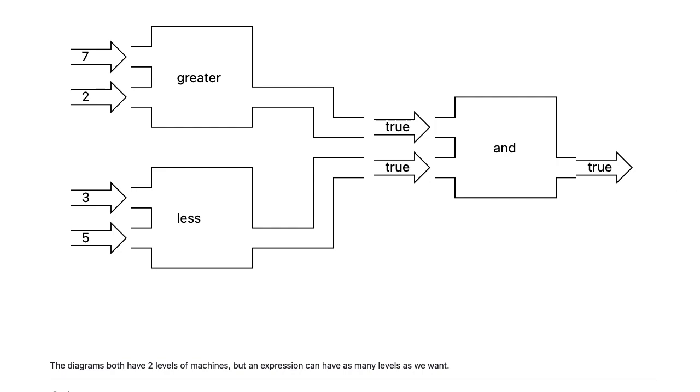The diagrams both have two levels of machines, but an expression can have as many levels as we want.